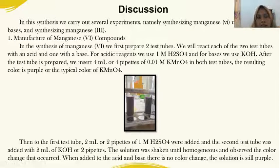First, synthesis of Mn(VI) compounds. In this synthesis of Mn(VI), we first prepare two test tubes. We will react each of the two test tubes, one with an acid and one with a base. For acidic reagent, we use 1 molar H2SO4, and for base, we use KOH.